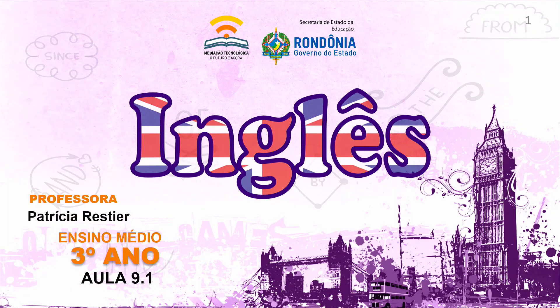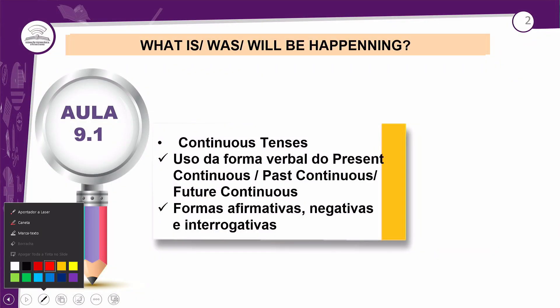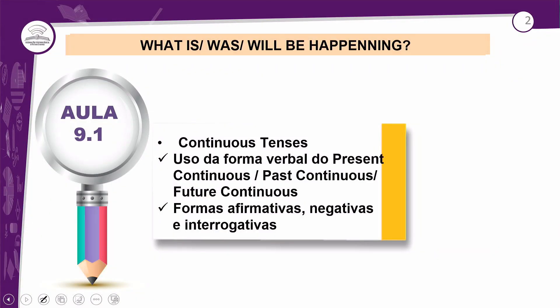Olha aí a aula 9.1, que tem um título que tem tudo a ver com a nossa aula. Afinal de contas, nós vamos ver sobre esses três tempos verbais que se encontram nos tempos contínuos — continuous tenses ou progressive tenses. E o título diz: what is, what was, what will be happening.